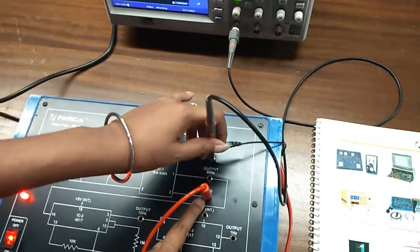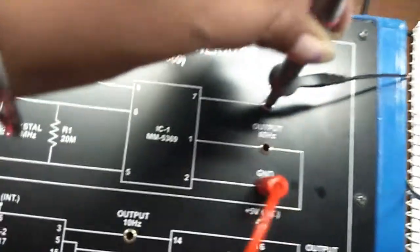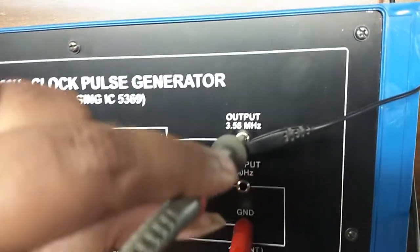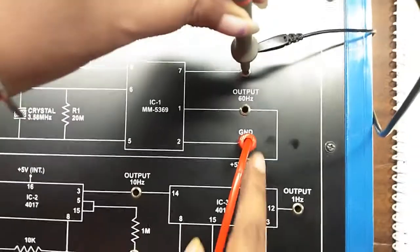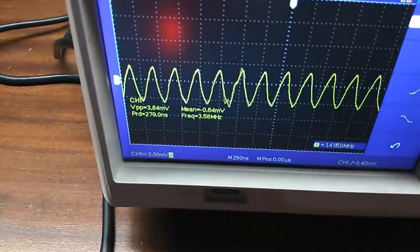Observe the output from this output 3.58 megahertz and connect the ground connection here. Observe the frequency. You can see that the frequency is 3.58 megahertz.